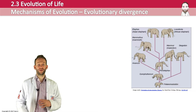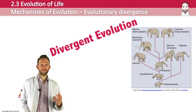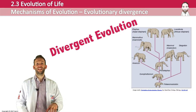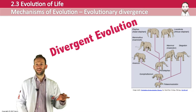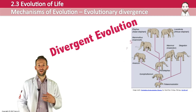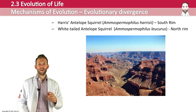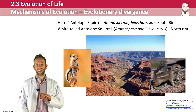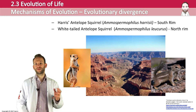Divergent evolution is where two or more species diverge from a common ancestor. Part of the original population can become isolated and be subjected to different selection pressures; the genotype changes and therefore the phenotype can change so much that eventually these populations become separate species — a process called speciation. For example, two closely related species of antelope squirrel live on opposite sides of the Grand Canyon. Due to different selection pressures on each side they have diverged: Harris's antelope squirrel is on the south rim and the white-tailed antelope squirrel is on the north rim.